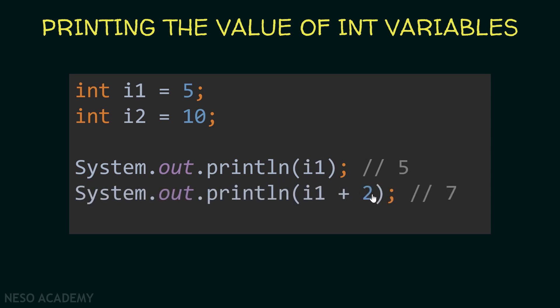And also we can do some arithmetic operations. So I can print i1 plus 2. So this over here will be calculated and then the result will be printed. So i1 is equal to 5. Over here we have 5 plus 2, which is equal to 7. So 7 will be printed.